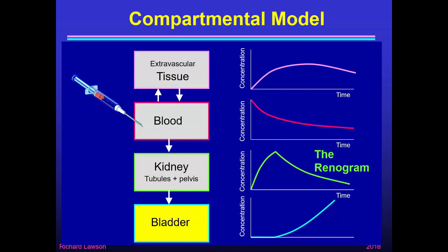From this compartmental model the curve representing the renogram is the green one — activity in the tubules and pelvis. The model says it starts from zero, rises to a peak, then comes down again. The rate of rise is not constant; it's a gentle curve up to a maximum because the rate of rise depends on how much activity is in the blood. At the very beginning there's a lot in the blood so the kidney activity rises quickly, but as blood concentration falls the rate of rise in the kidney begins to flatten off before it falls again.